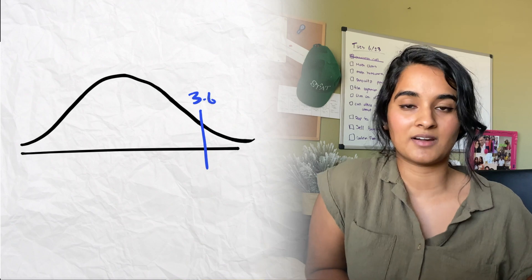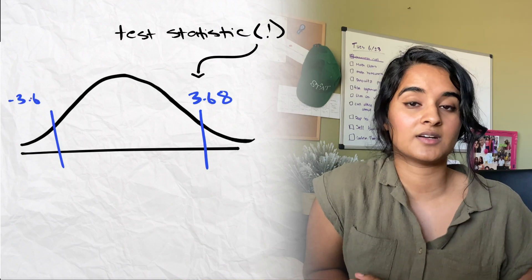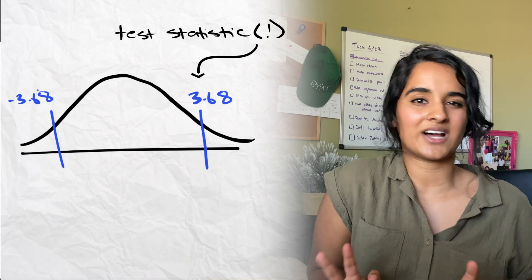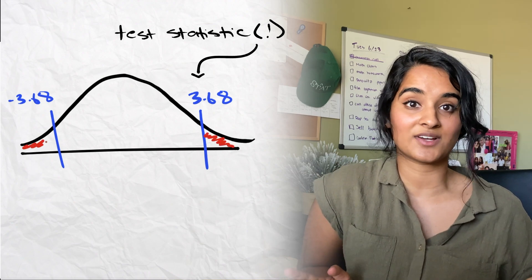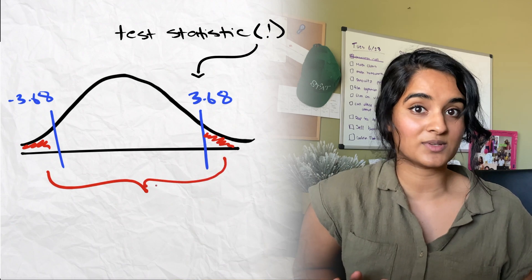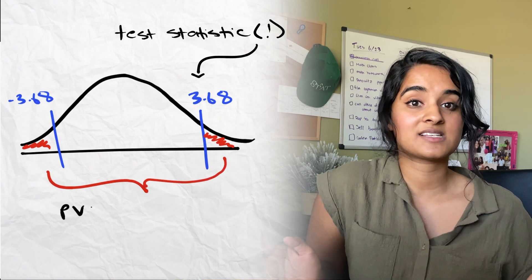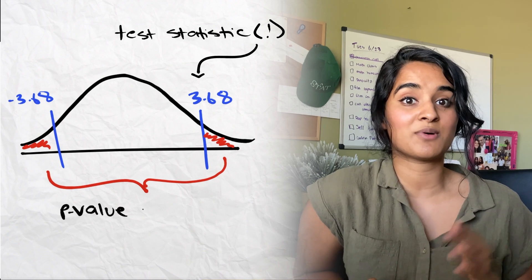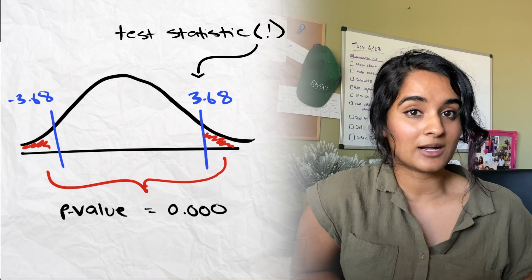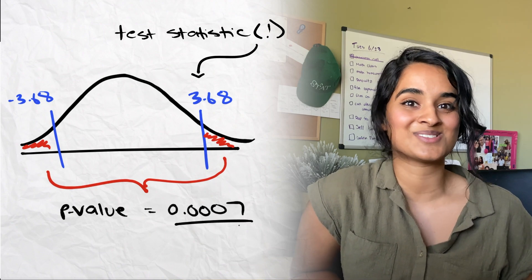You can calculate your p-value using a t-table or computer software. Looking at the t-distribution: if you draw the distribution and mark 3.68 to the right and negative 3.68 to the left, then color the area under the curve to the right and left of those points, that area is your p-value. The reason we have both sides is because this is a two-sided test. When we add it up, we end up with a p-value of 0.0007.